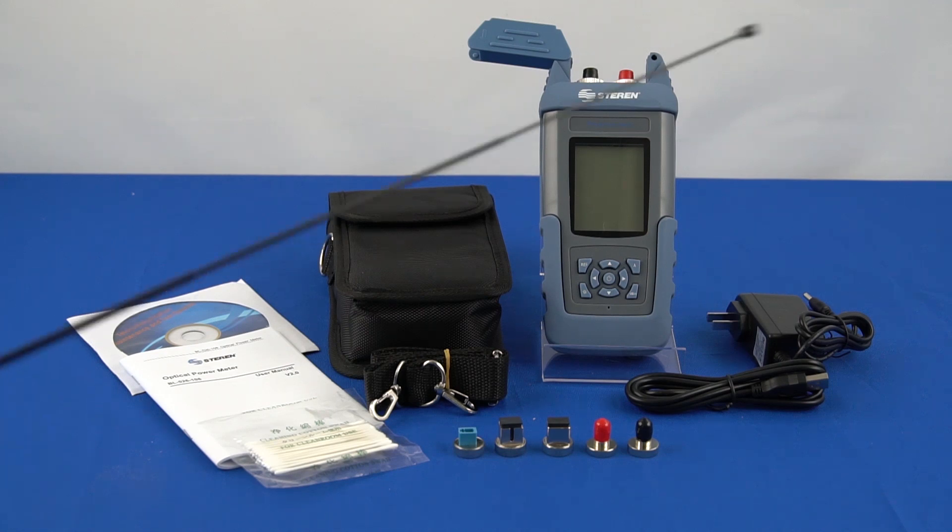Each box includes the optical power meter, an AC charging adapter, FC interchangeable adapters which is already on the unit, an LC, SC, and SD interchangeable adapters.